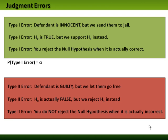A type one error has a probability referred to as alpha. Alpha is the complement of our confidence, which we'll get into later on. A type two error uses the term beta, which represents the probability of making a type two error. We may never know that we made an error.